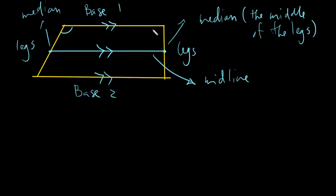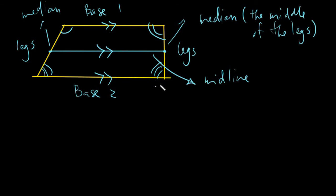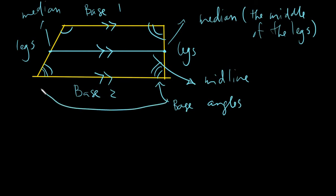The last part we will be discussing is our base angles. Base angles could be on either base, and they always come in pairs. For base one, you will have one pair of base angles, and for base two, you will have one pair of base angles as well. So this would be your base angles — they always come in pairs. So this would be the parts of our trapezoid.